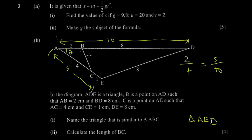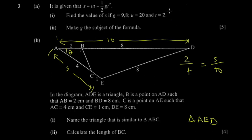Then it says calculate the length of BC. To calculate BC, you need to know two corresponding sides. For the big triangle over the small triangle: triangle AED over triangle ABC equals a ratio of sides. AB corresponds to AE. AB equals 2, AE equals 5. BC is what we're looking for, and it corresponds to DE which equals 8.